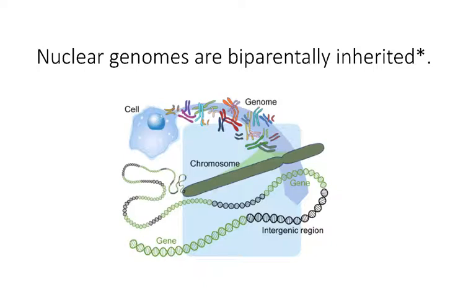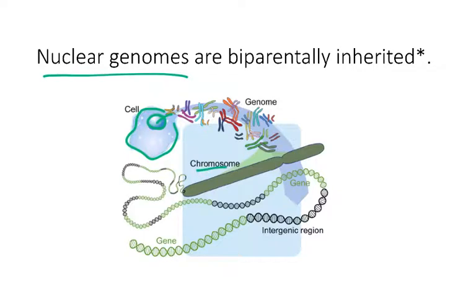Normally when we talk about DNA, we're thinking of nuclear genomes. We have a cell, within that cell there's a nucleus, within that nucleus we have all of this different DNA coiled into different chromosomes, and on each of those chromosomes there are multiple genes.